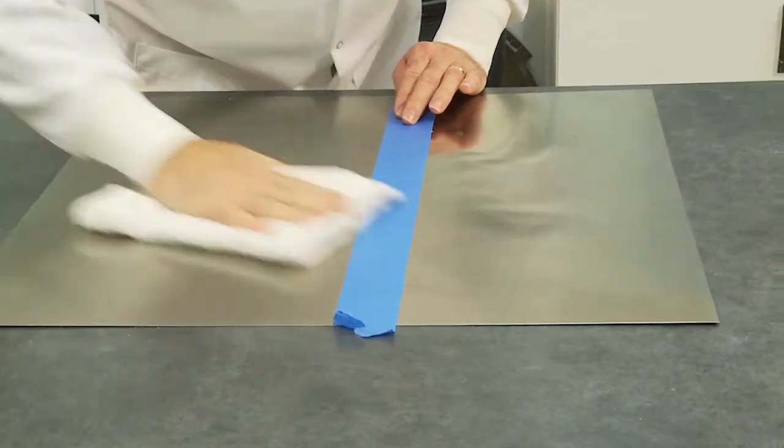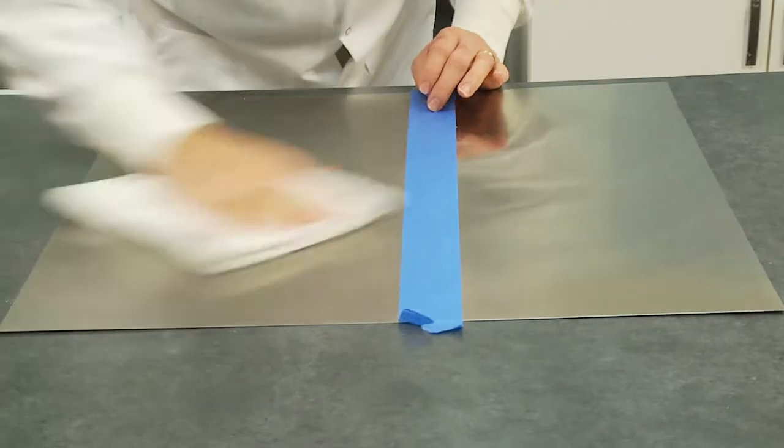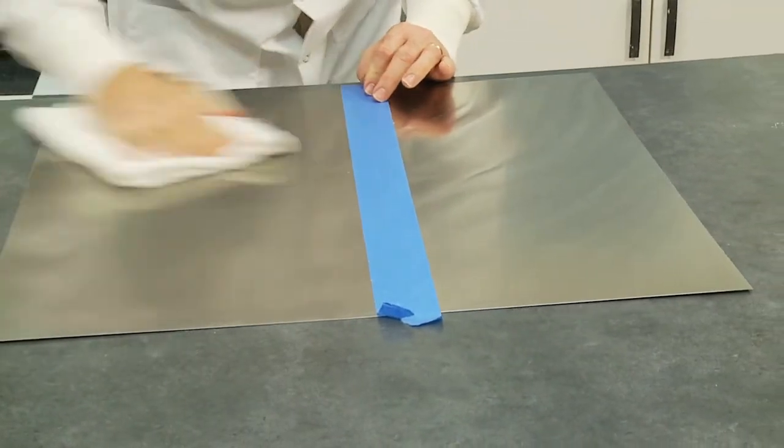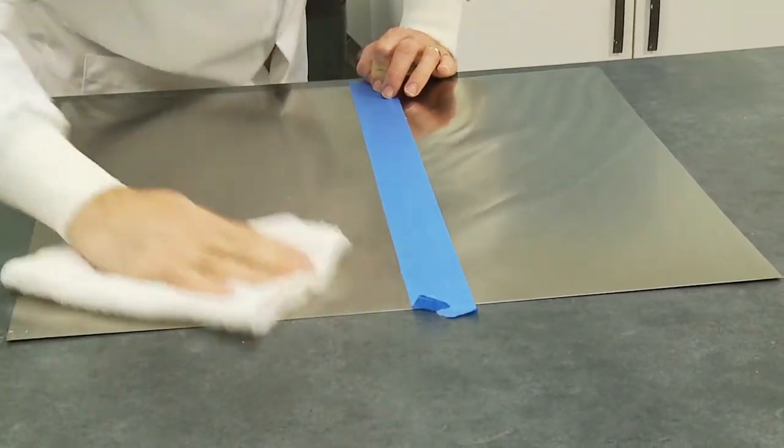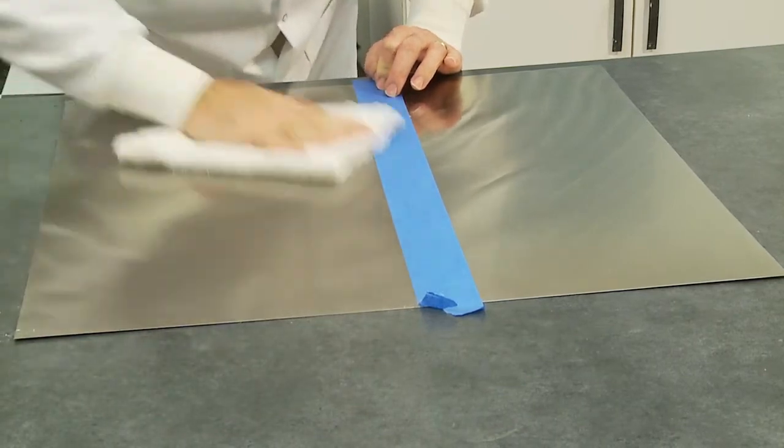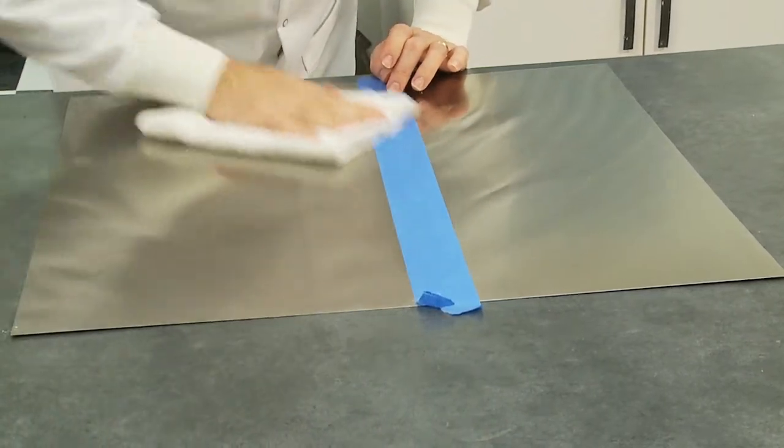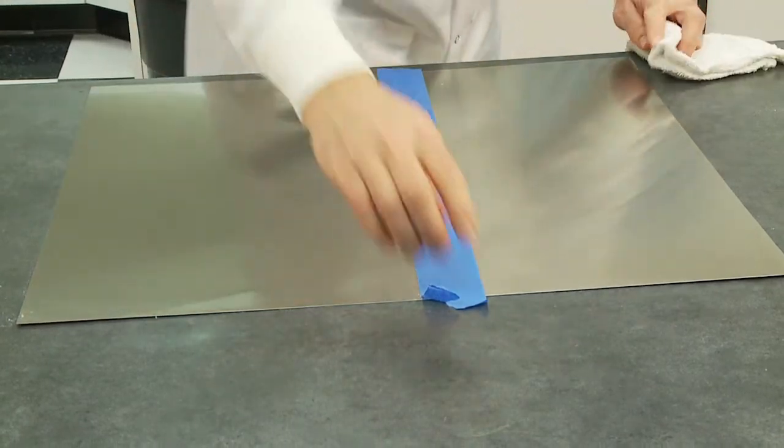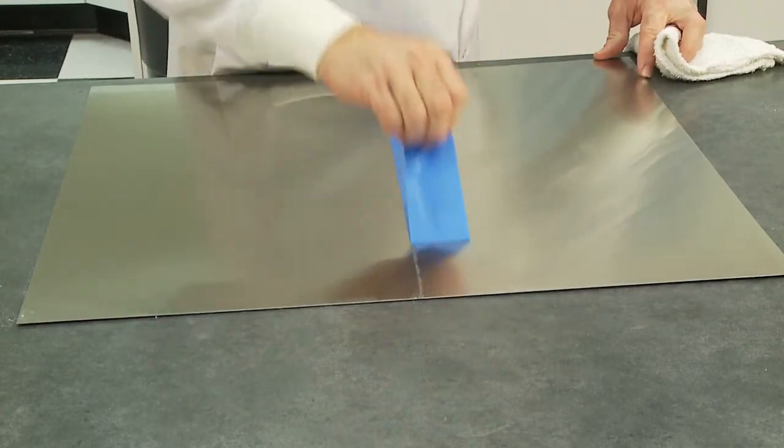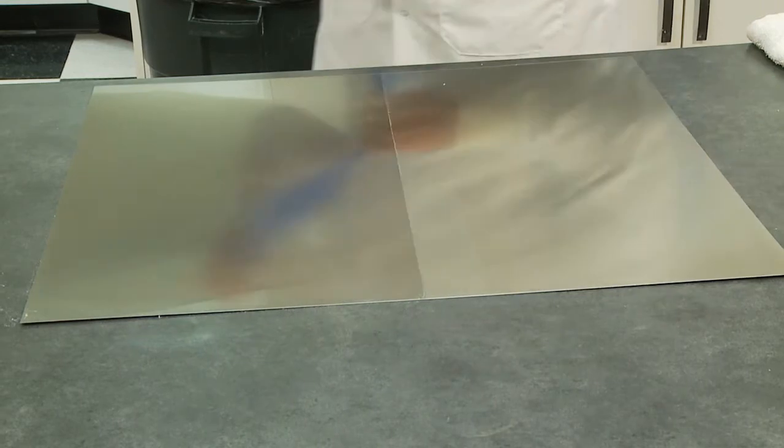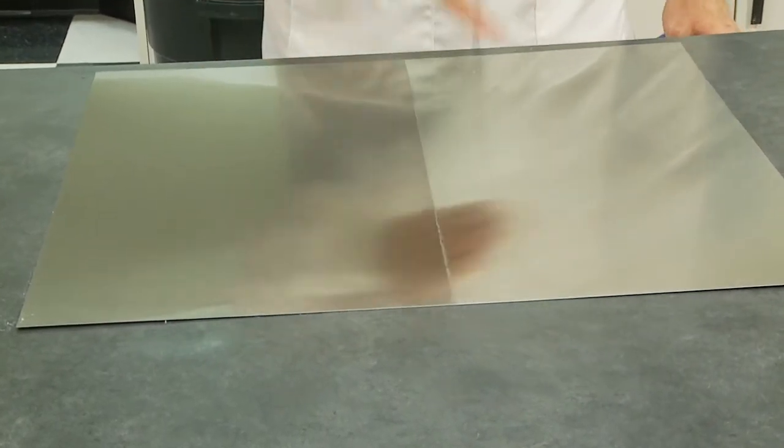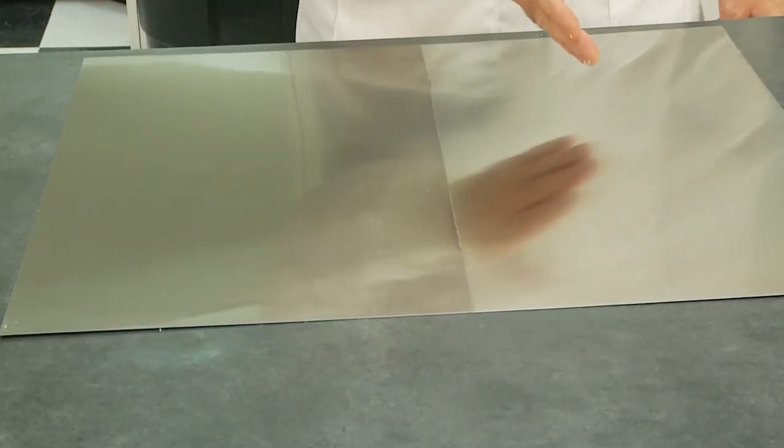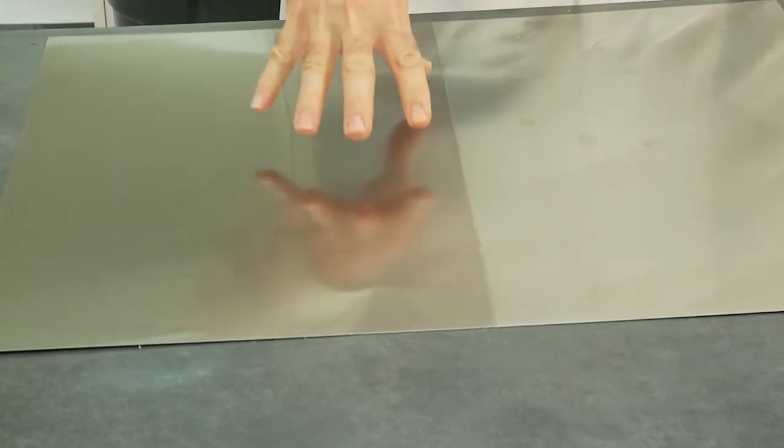As the product dries, it dries to a streak-free surface. You can continue to work the product into the surface without creating streaks. And as you can see, when I pull this tape off, the enhanced surface, the right versus the left, untreated versus treated.